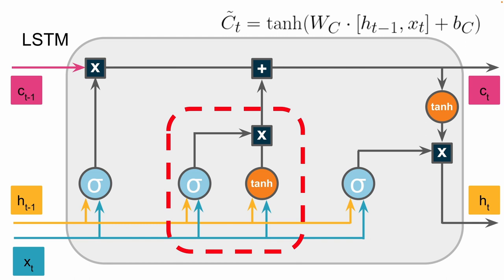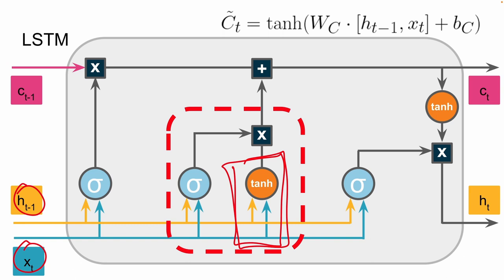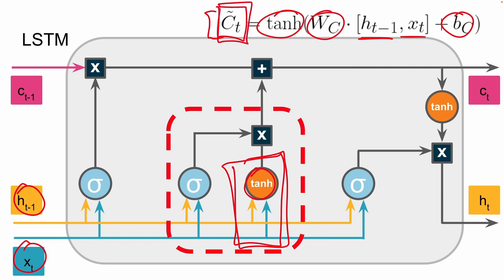Next, we have the input gate and the input node. The input node takes in two values — the previous hidden state and the current inputs — combines them together using weights and a bias, and sends them through a hyperbolic tan activation function. Mathematically, we're taking our previous hidden state and current inputs, multiplying by some weights, adding a bias, and sending it through hyperbolic tan. The resulting values are basically a proposed update to the cell state, or long-term memory.